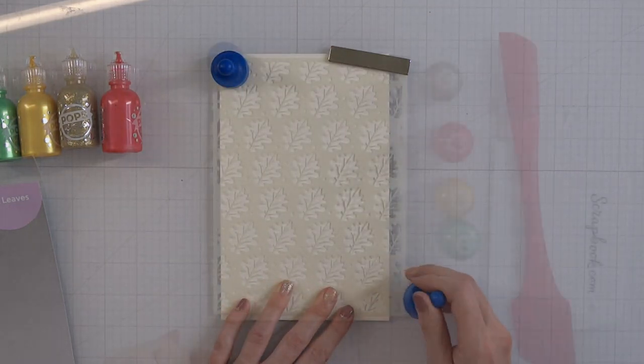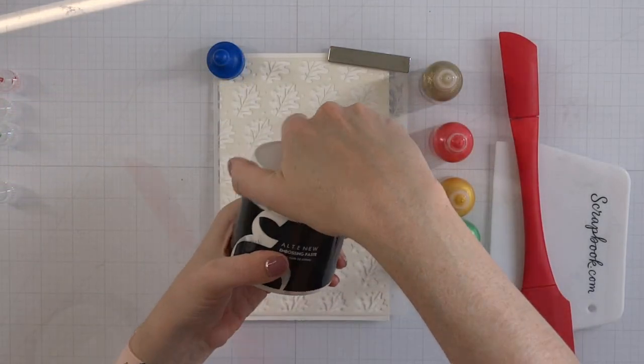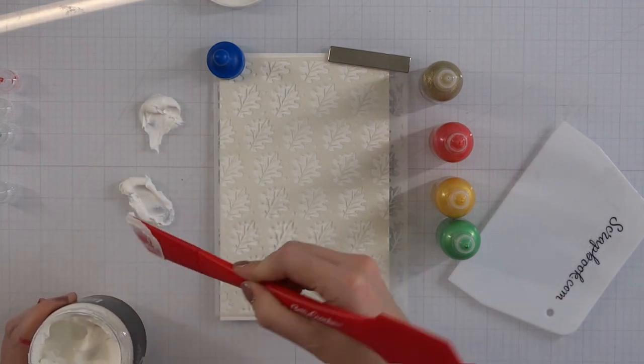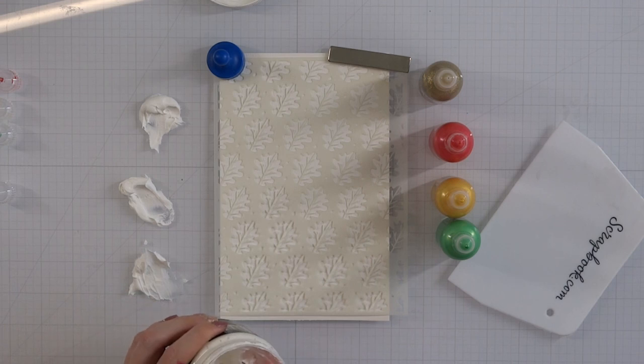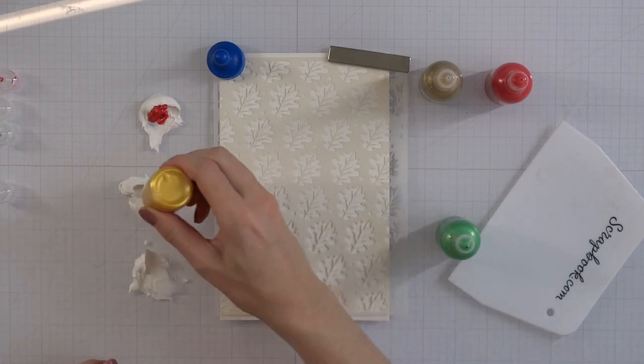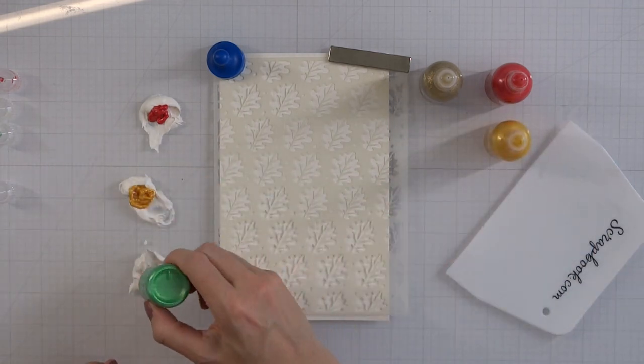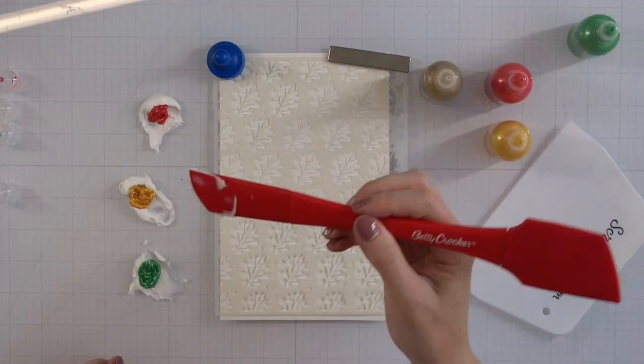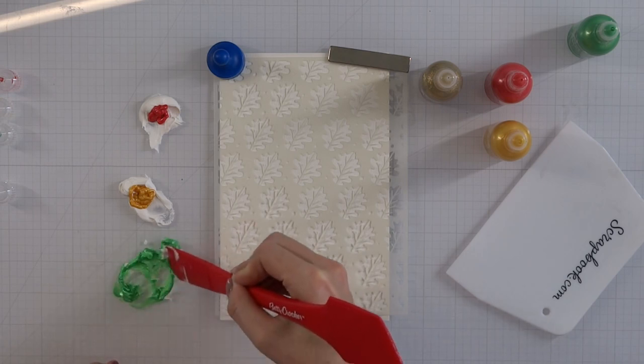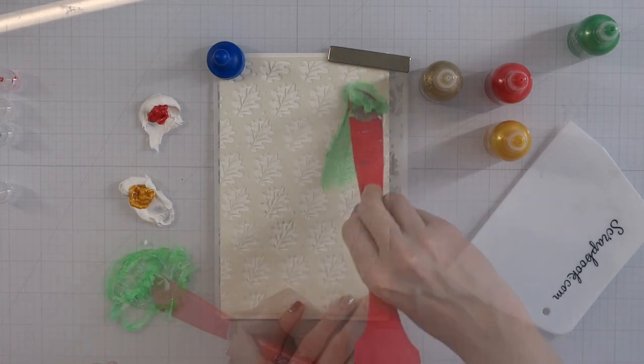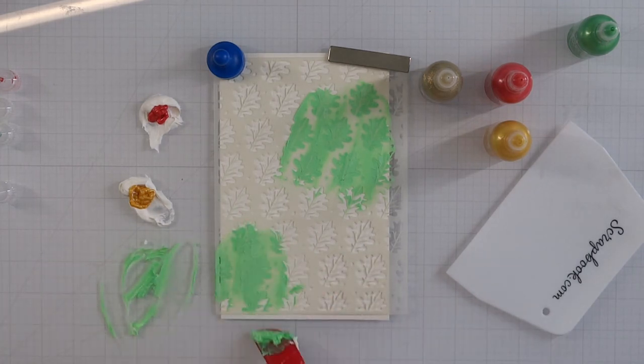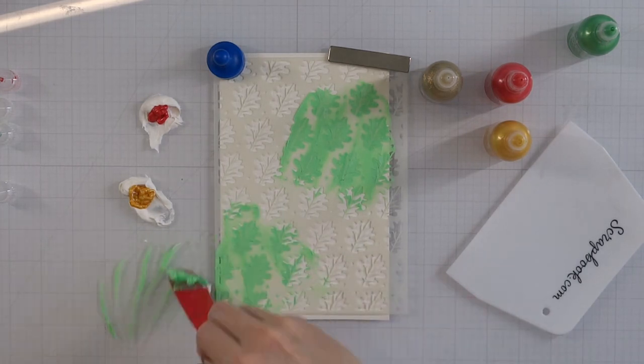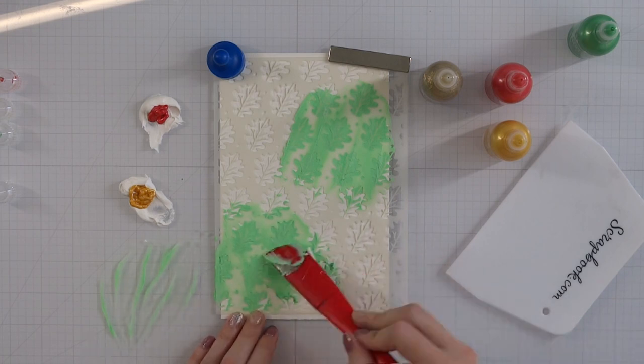You can use the pops of color by themselves to stencil, however I like to change up the consistency a little bit. I love that when you add pops of color to this white embossing paste, it really doesn't lighten the color much. With other products I've used, it changes - for example, red may become pink - but with this, it stays a vibrant red.